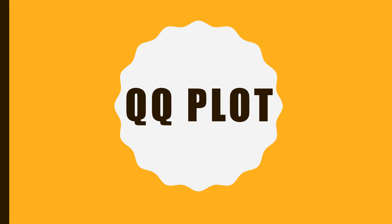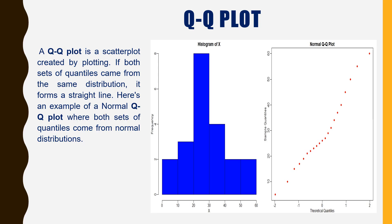Q-Q plot. A Q-Q plot is a scatter plot created by plotting quantiles. If both sets of quantiles came from the same distribution, it forms a straight line.